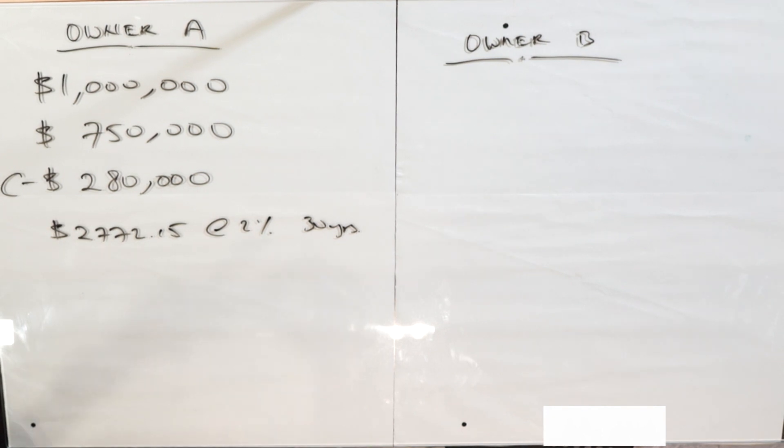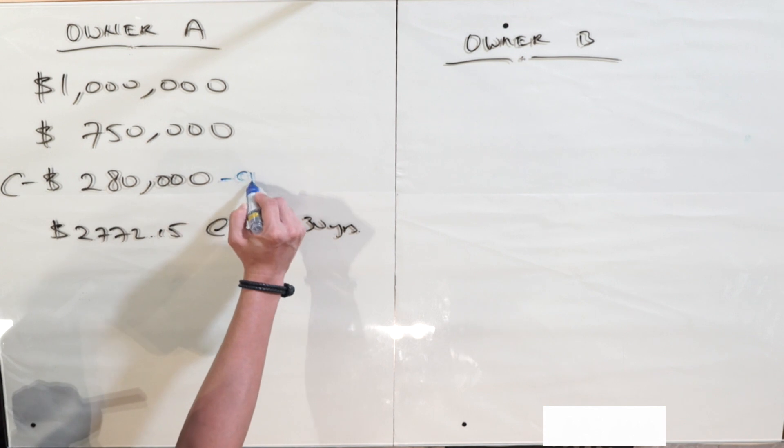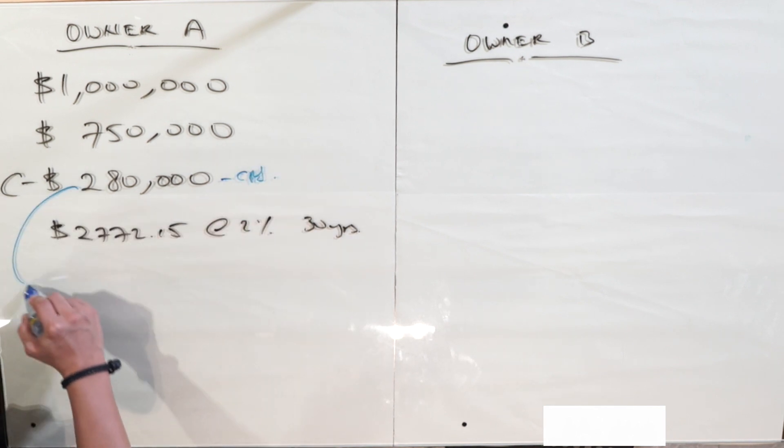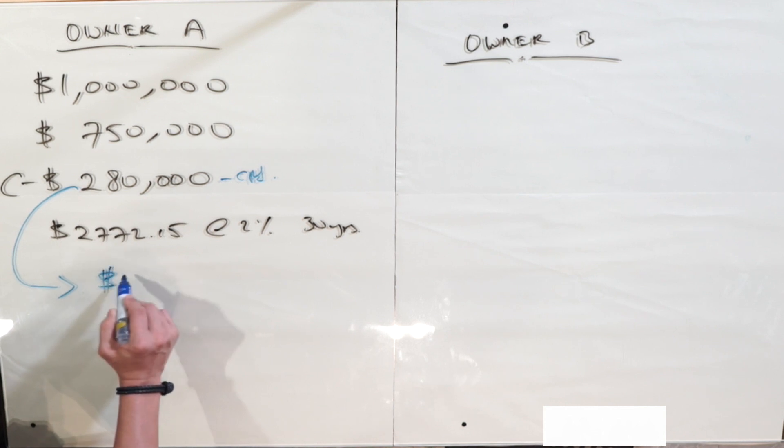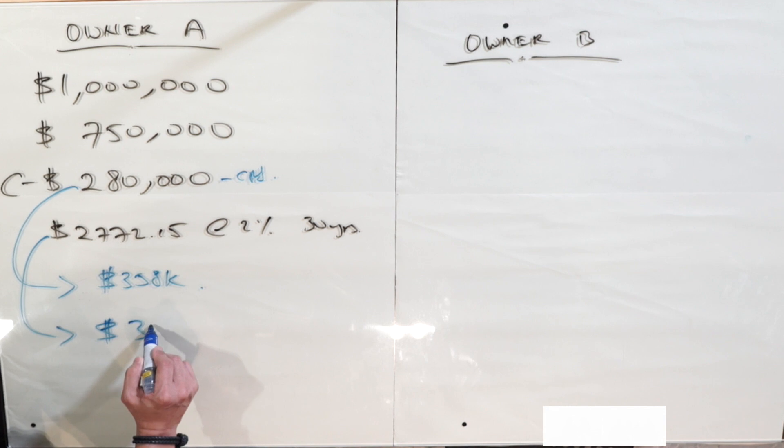So for owner A, what happens is that this amount that he used with CPF, it will have come up to $358,000 in 10 years, and monthly payment also using full CPF would then come up to $373,000.